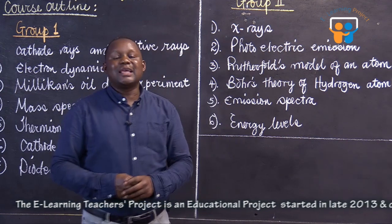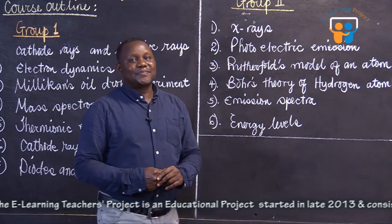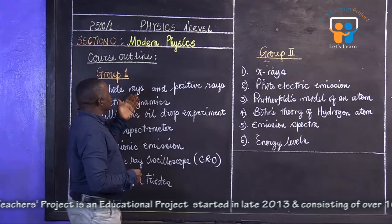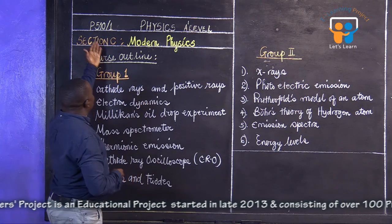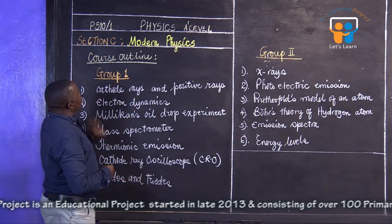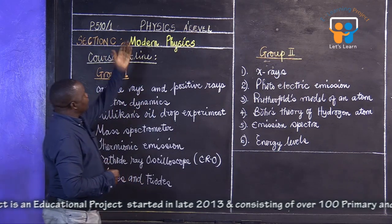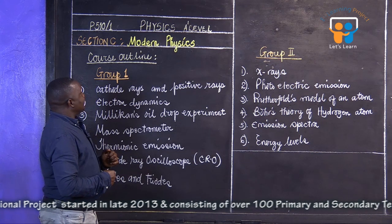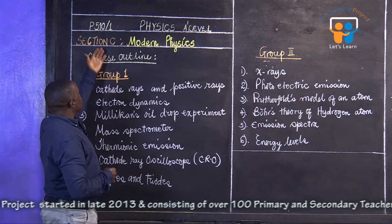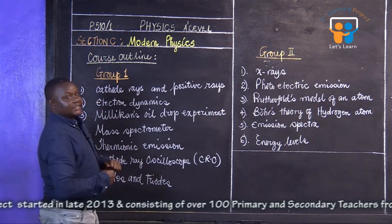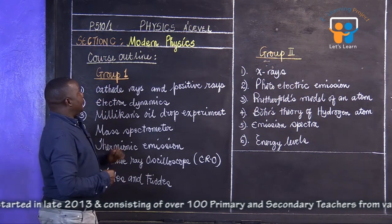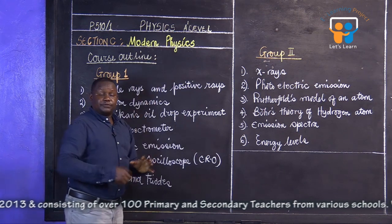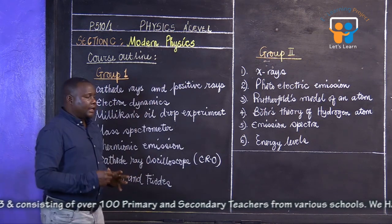Welcome to my classroom. Okay, as we said, you have paper 510 stroke 1, physics A level. And this is going to be section C of modern physics — physics 1.